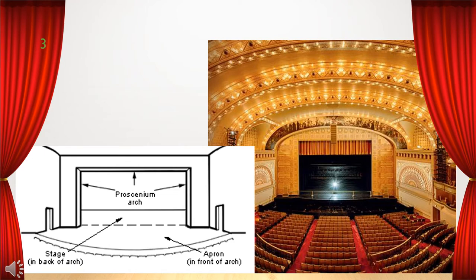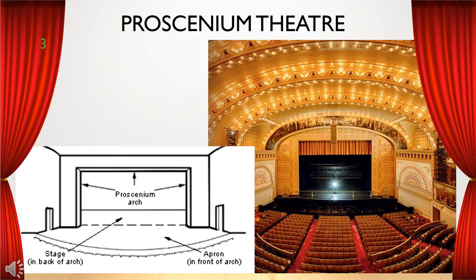A proscenium theater is the most common type of theater and one most people tend to visualize when they think of going to see a play. The audience sits on one side of the stage, all viewing the performance from basically the same place. The stage is surrounded by an opening that looks kind of like the frame of a picture. This frame is called the proscenium arch.